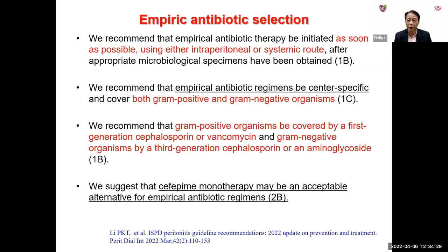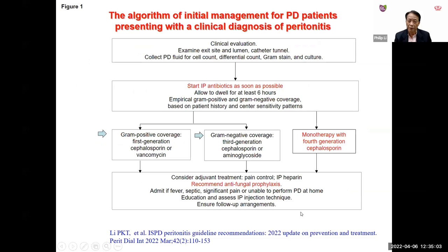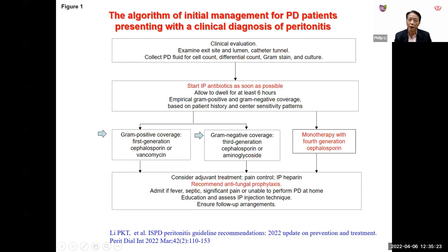For empirical antibiotic selection, treatment should be started as soon as possible using either intraperitoneal or systemic routes — this is a 1B recommendation. The usual empirical treatment provides Gram-positive and Gram-negative coverage. New this time is the addition that monotherapy with cefepime (a fourth-generation cephalosporin) may be an acceptable alternative empirical antibiotic regimen, at evidence level 2B. The flow chart recommends starting IP antibiotics immediately with both Gram-positive and Gram-negative coverage, and always including antifungal prophylaxis.